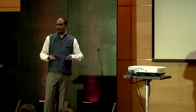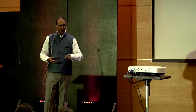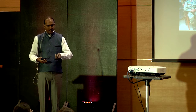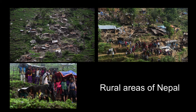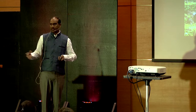Again in this case, people don't immediately trigger the data. This is Operation Maitri, what we did in India with the Indian Army. These are areas affected in urban and rural areas. The same problem happened — everybody concentrated only in Kathmandu, not in rural areas.